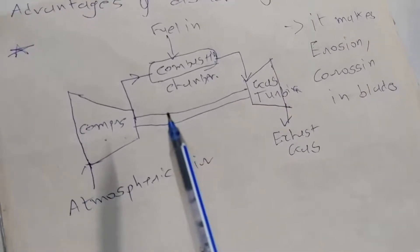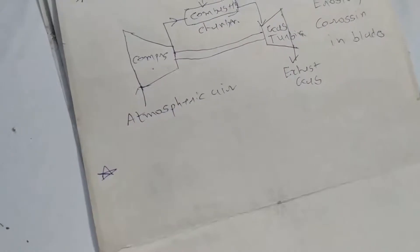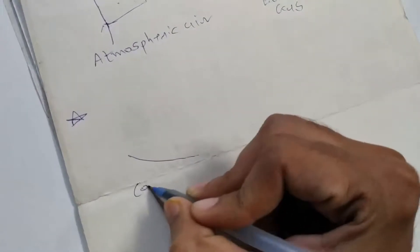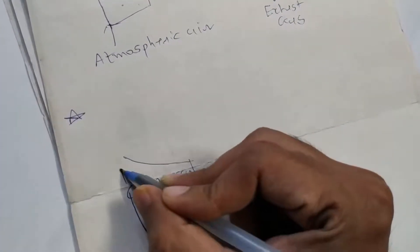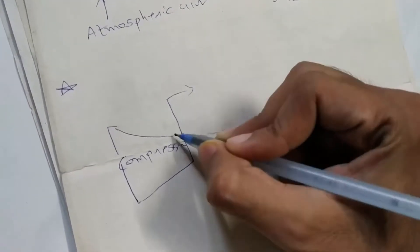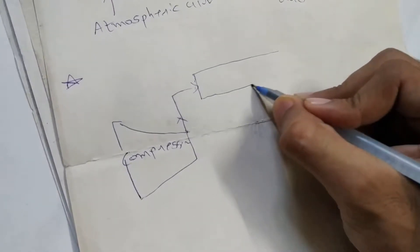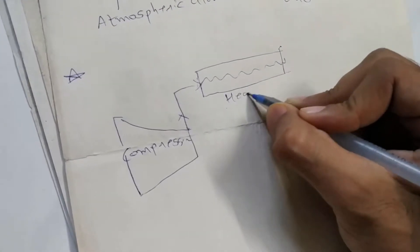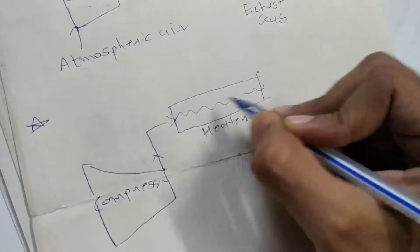Let me draw a figure of the closed cycle gas turbine. I will first draw the compressor, which is the same as in the open cycle, and then air first goes to a heat exchanger. There can be two types of heat exchanger — one is a heater type and one is a cooler type — and we are going to use the heater type here.